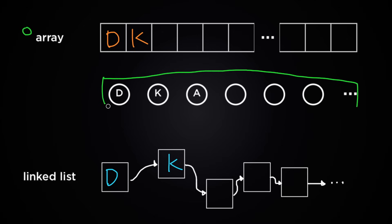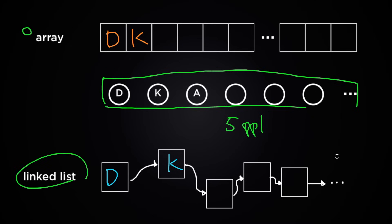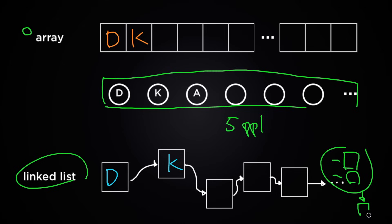At this point you might say the array data structure is the better one — but not necessarily. Think about this: 100 people showed up and you're happy, but suddenly five more unexpected people show up. With the linked list data structure, it's pretty easy to deal with that — just find five more boxes, five more strings, and add them to the last box you had.